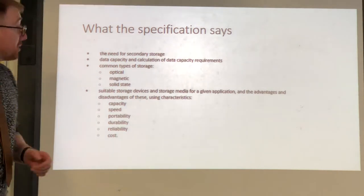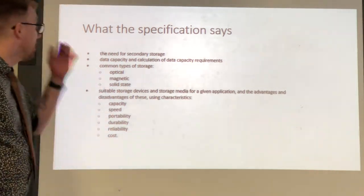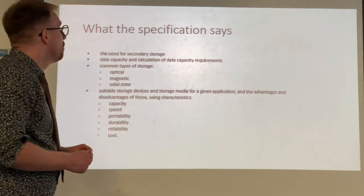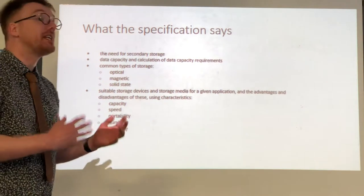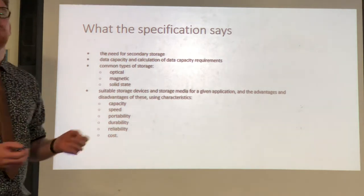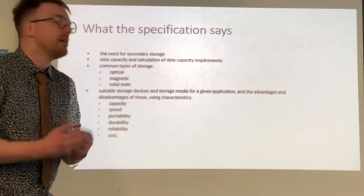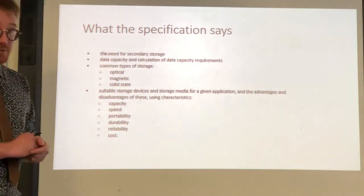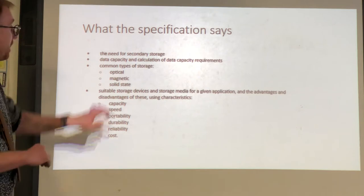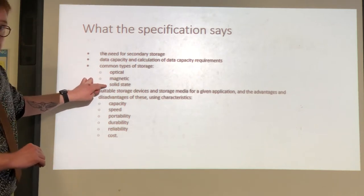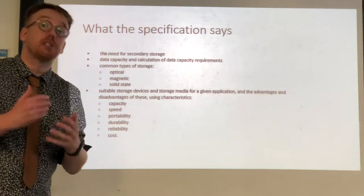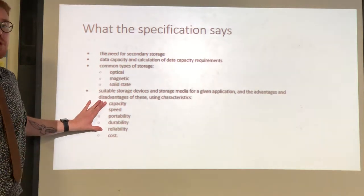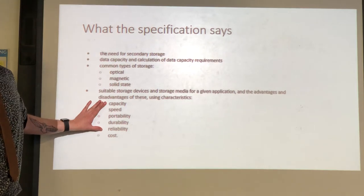In terms of storage devices, there's a range of things that the specification says we have to understand. The first thing is we need to understand why we need secondary storage and what it's there for. We need a basic idea of the different data capacities of different secondary storage devices and how we might calculate how much storage we need for a given set of files. We'll look at different types of storage devices and differentiate between optical, magnetic, and solid state storage, and identify the characteristics of each to help us decide what type to use in a given scenario.